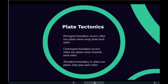When two plates come together, it is known as a convergent boundary. The impact of the two colliding plates buckles the edge of one or both plates up into a rugged mountain range, and sometimes bends the other down into a deep sea floor trench. A chain of volcanoes often forms parallel to the boundary, and powerful earthquakes shake a wide area on both sides. If one of the colliding plates is topped with oceanic crust, it is forced down into the mantle where it begins to melt, and magma rises through the other plate, solidifying into new crust.